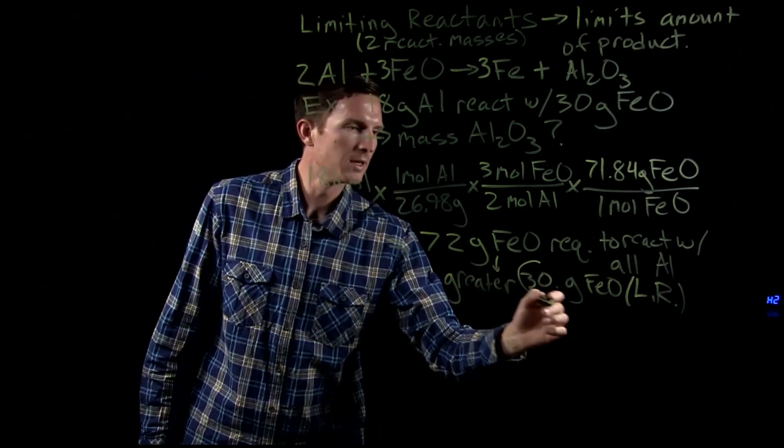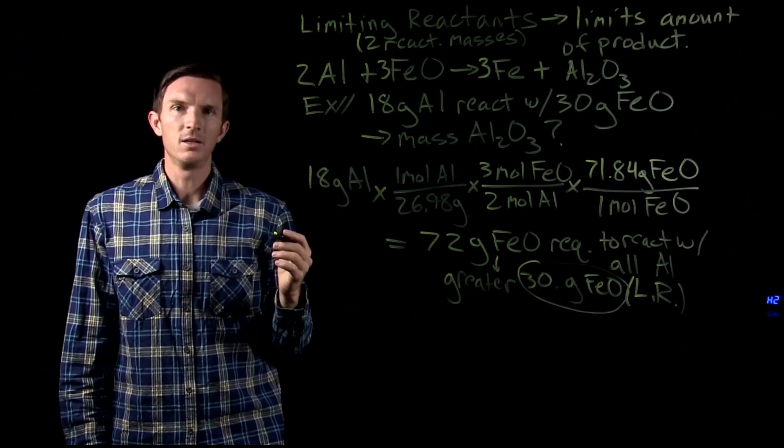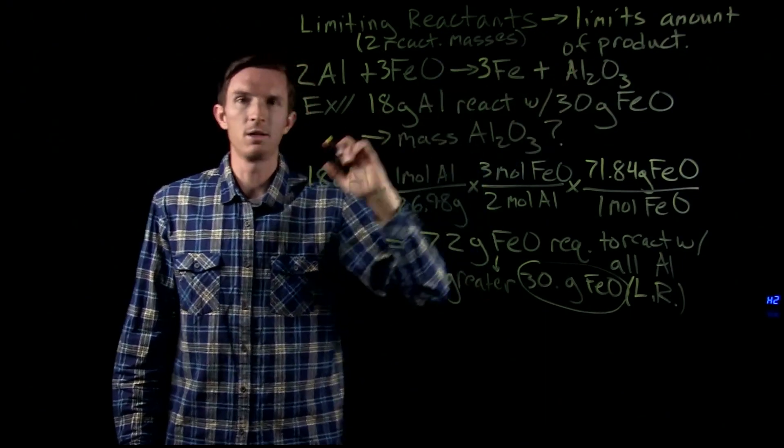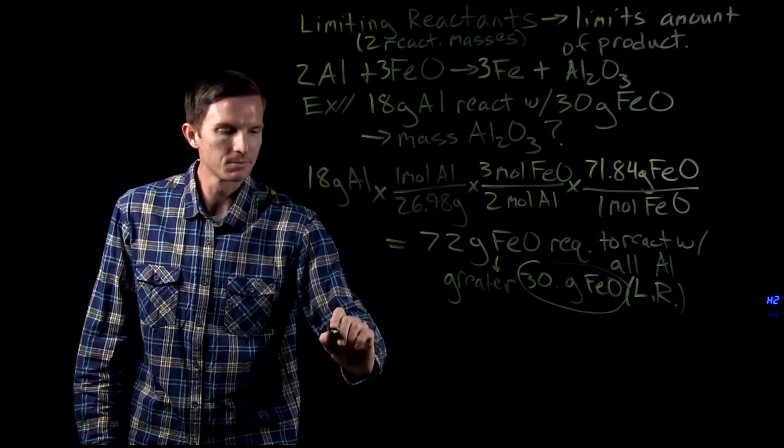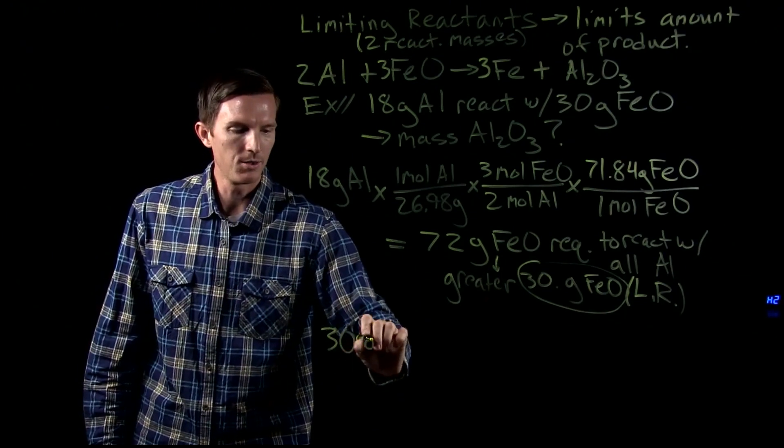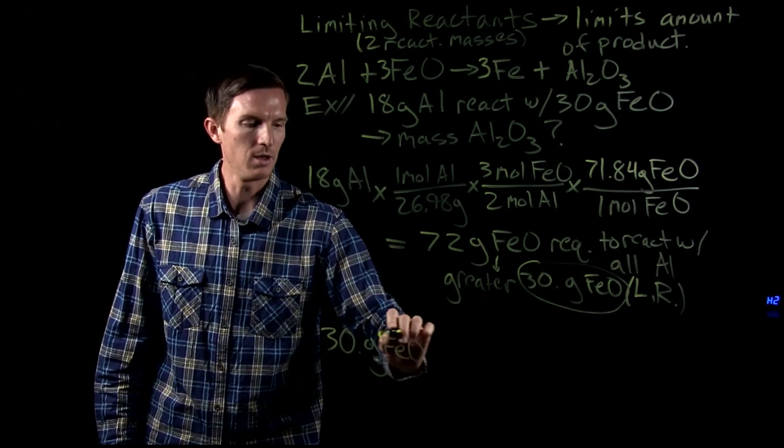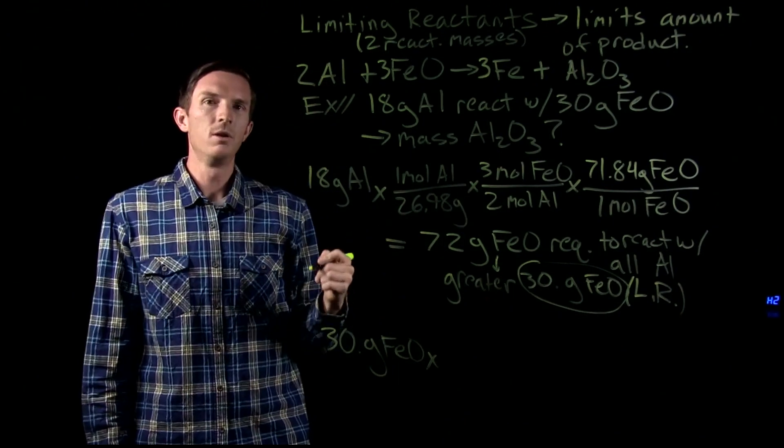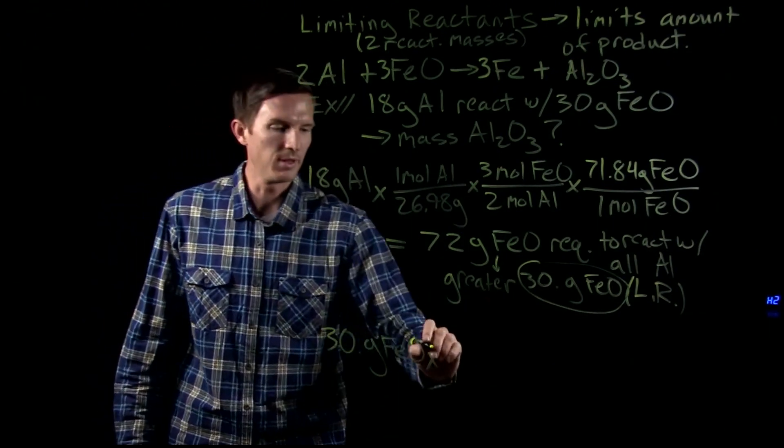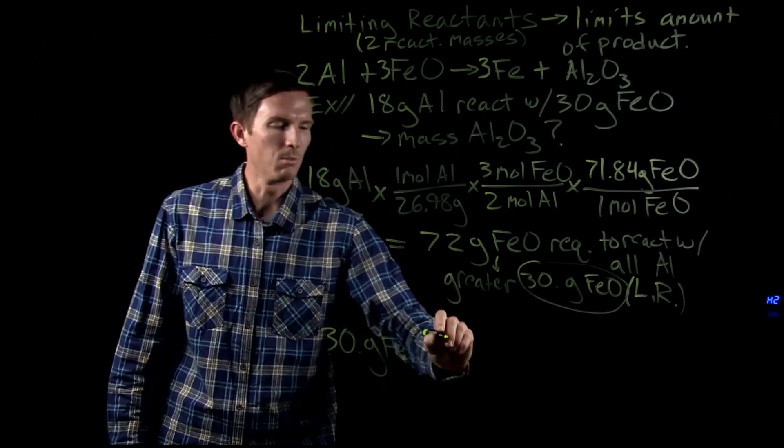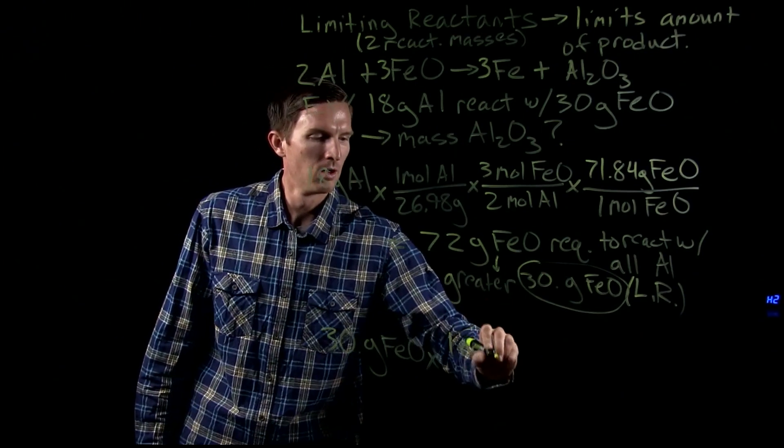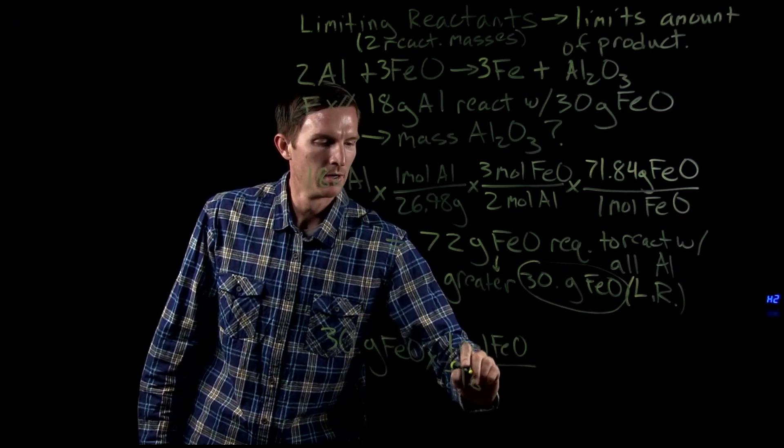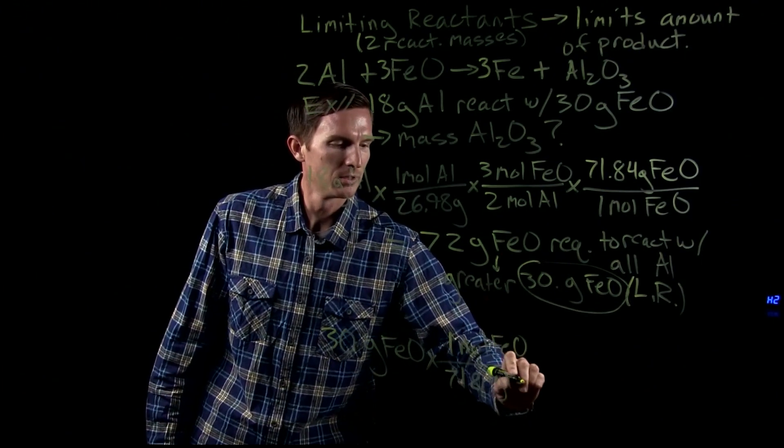So what we're going to do is we're going to take that limiting reactant and we're going to use it and say, if all that reacts, how much of my product am I going to get? So we have our 30 grams of iron oxide, and we're going to convert that to the mass of aluminum that would be formed. So again, we're going to use our molar mass. One mole of our iron oxide is 71.84 grams.